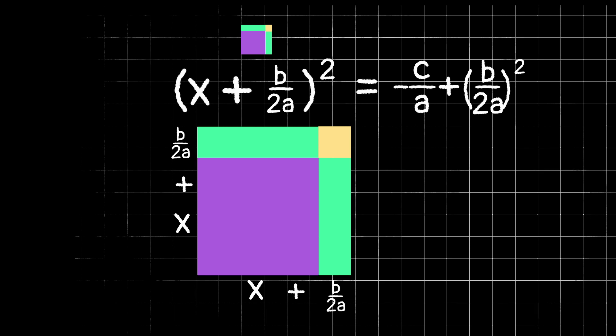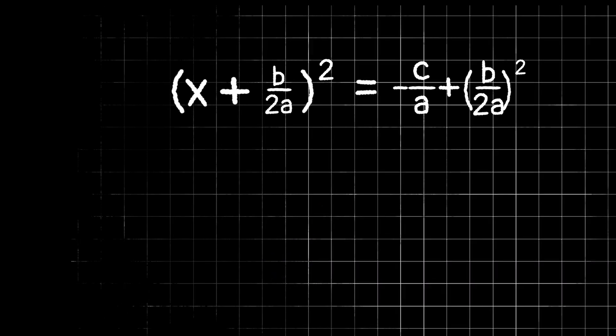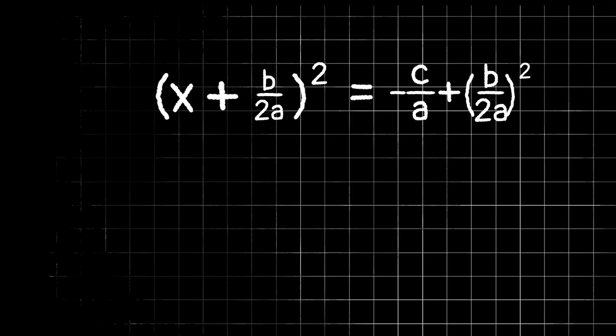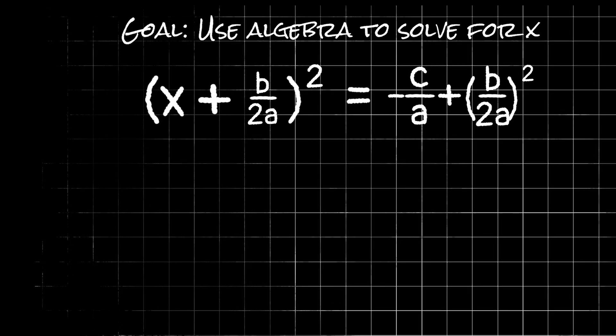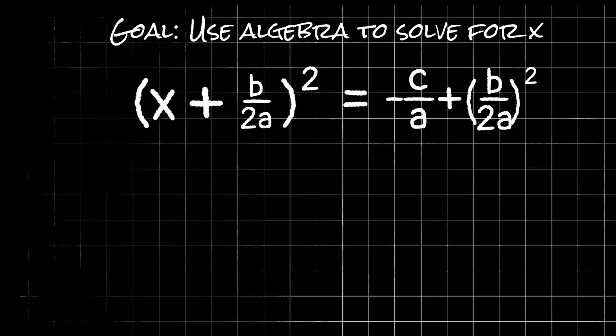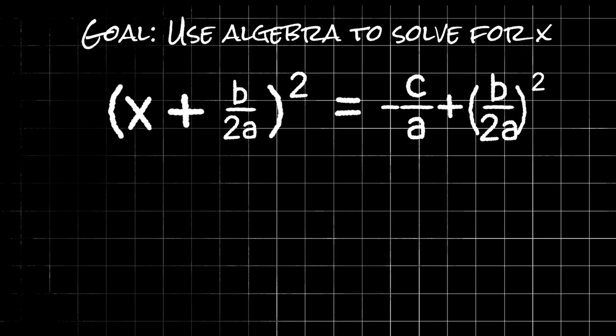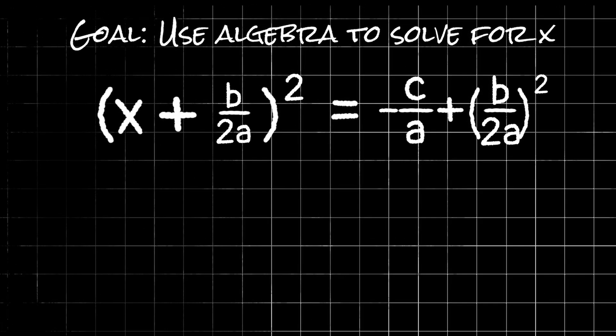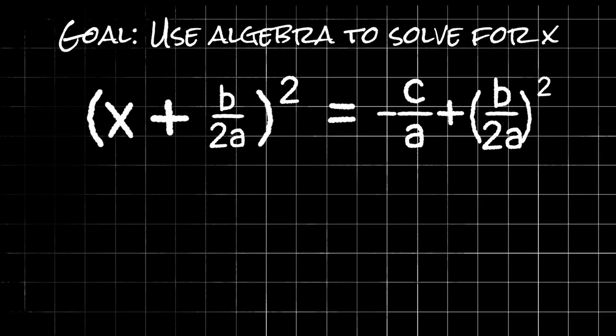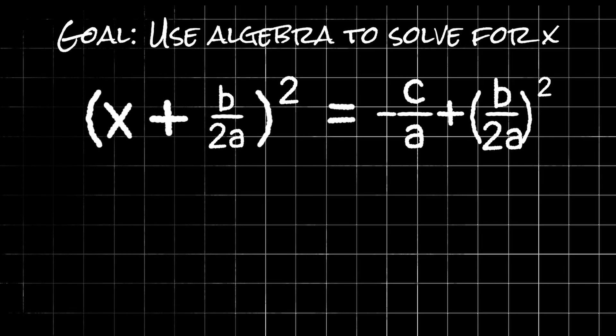I know this still looks a little bit complicated, but don't worry, we are on the home stretch. From here on out, our goal is again, just to isolate that x term, which is a lot easier now since we only have one x term. Before we isolate x, let's just make this right side look a little bit neater. b over 2a squared can be rewritten as b squared over 4a squared.